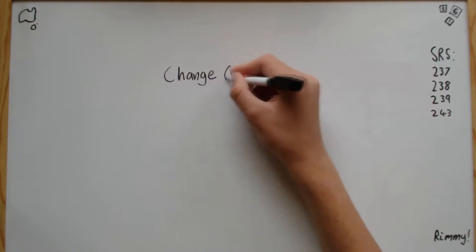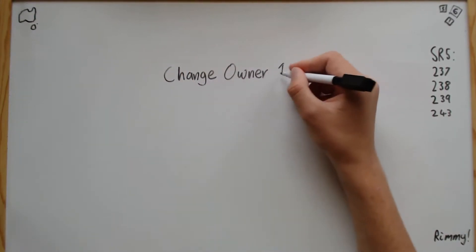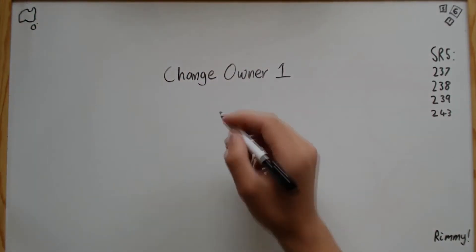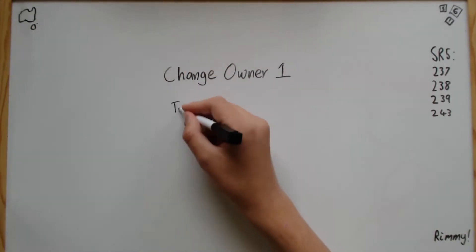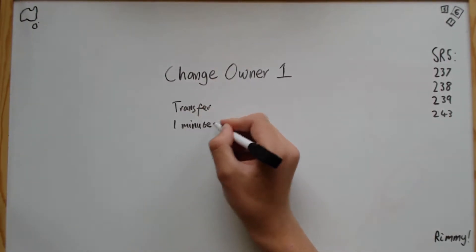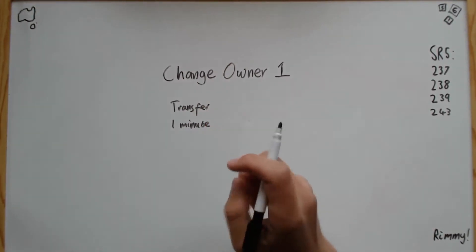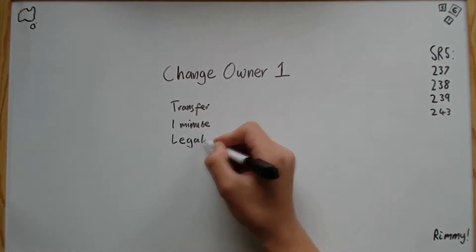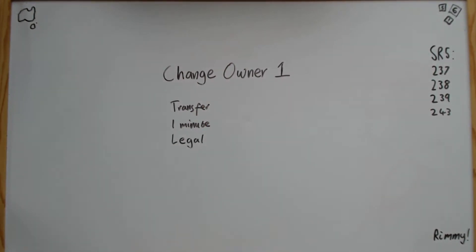The first way to change ownership is to have the owner themselves transfer the ownership to you, which takes around a minute. Once this is done, the target is then the owner, and the transferer loses the ownership status.